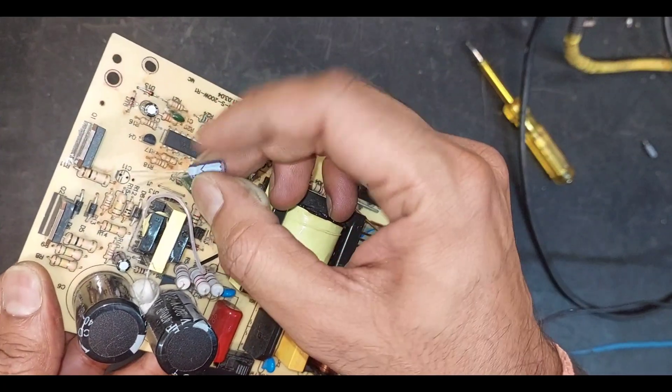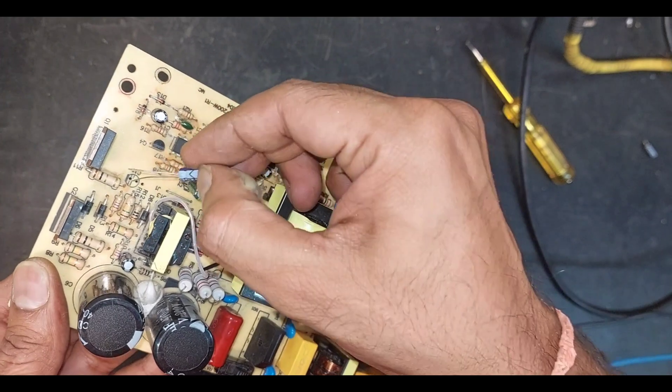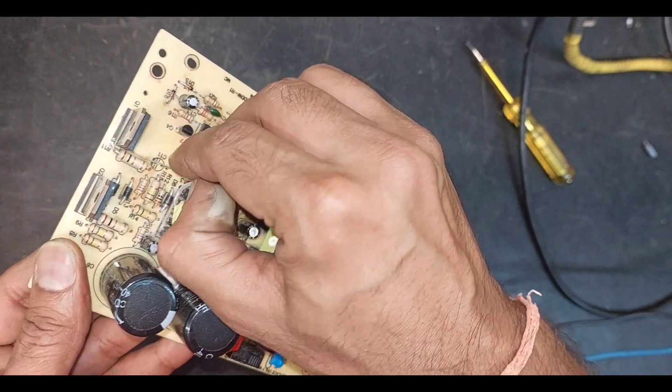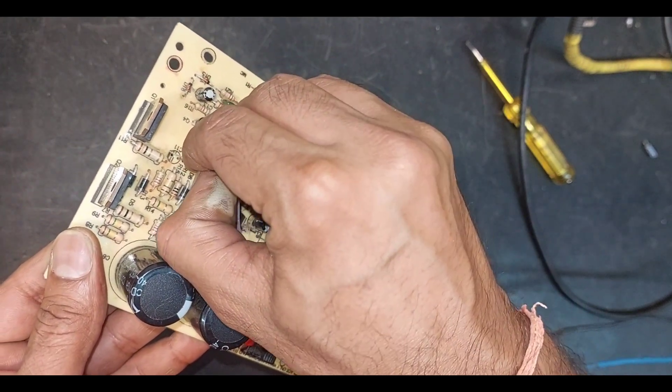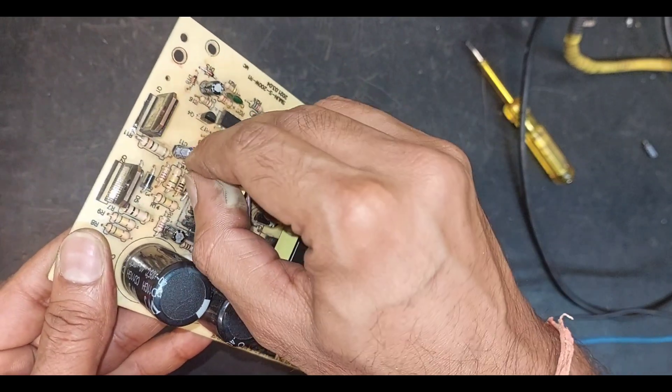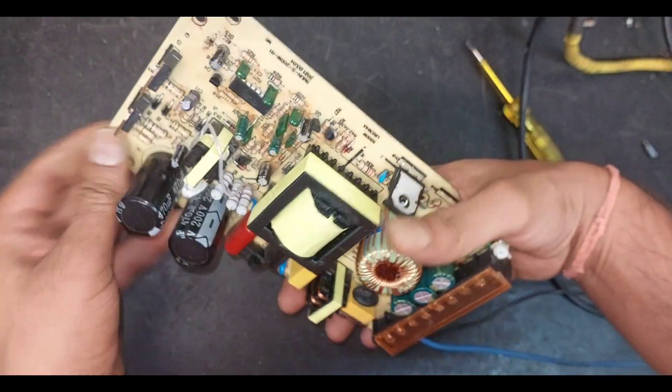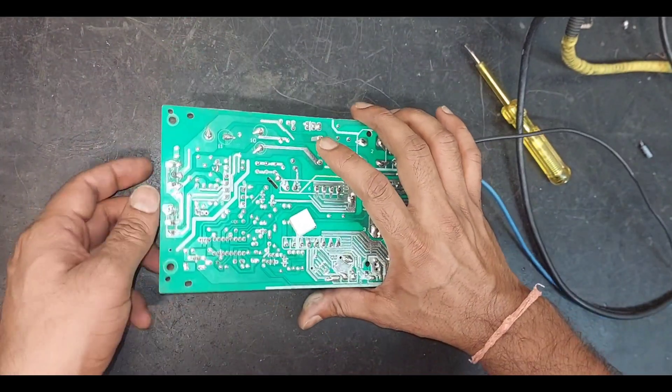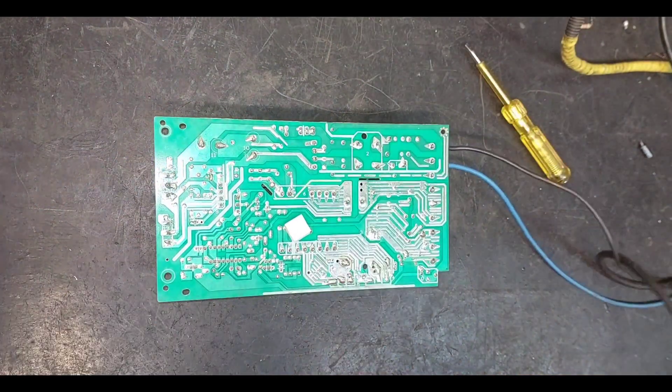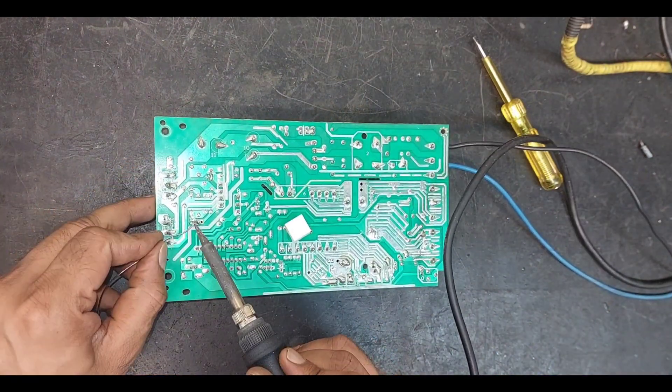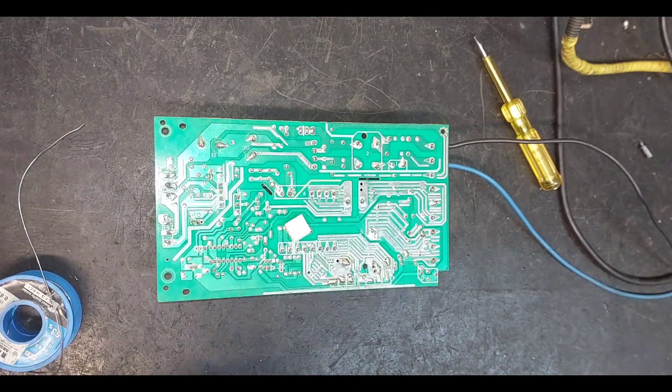When we replace the capacitor, it is crucial to pay attention to its polarity. On the PCB there is a marking for negative terminal. We will connect the negative terminal of the new capacitor to the negative marking on the PCB. Now we will solder it and then we will apply power and test if there is any change or not.